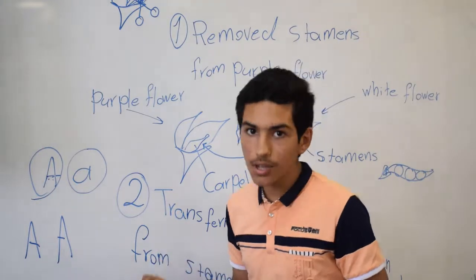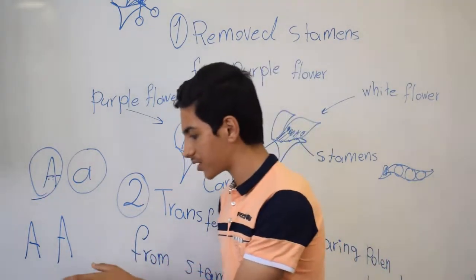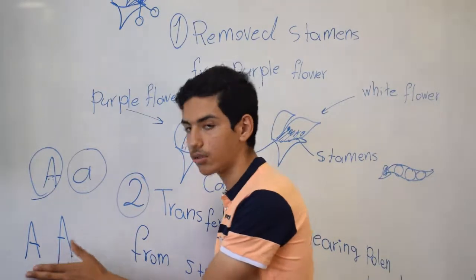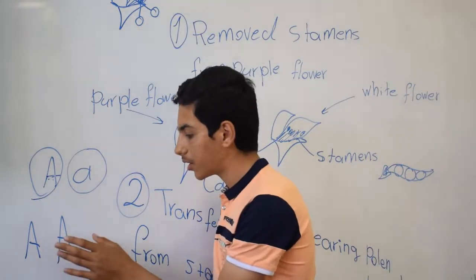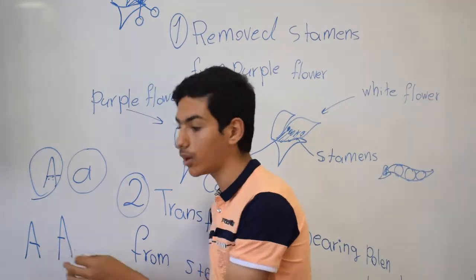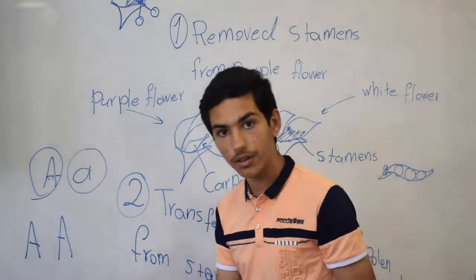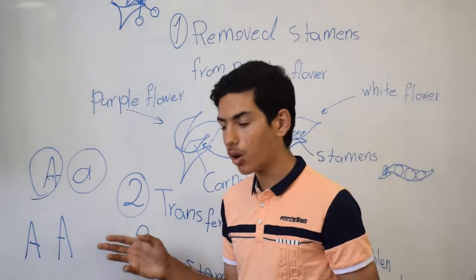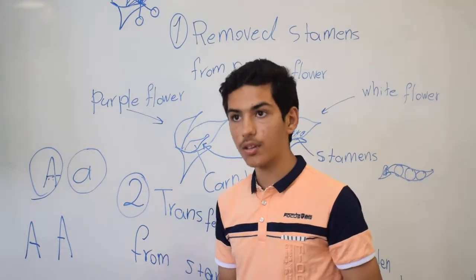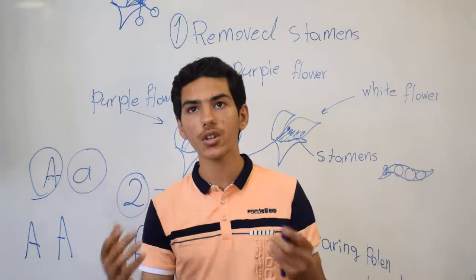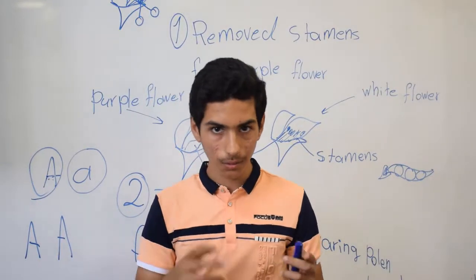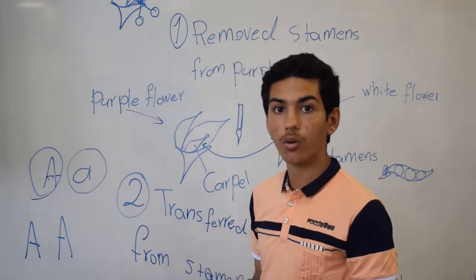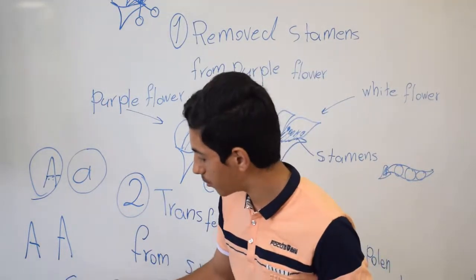If we have a genotype with two dominant alleles, we have a plant that does not have any problem. Because both alleles are dominant and they live together, we call this a homozygous genotype. Homozygous genotypes are those whose alleles are the same — for example, double capital A or double small a.